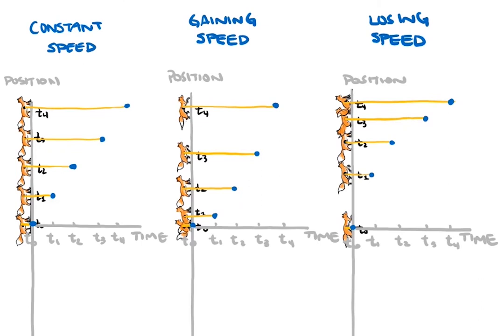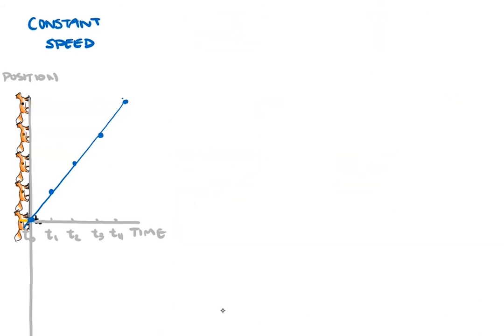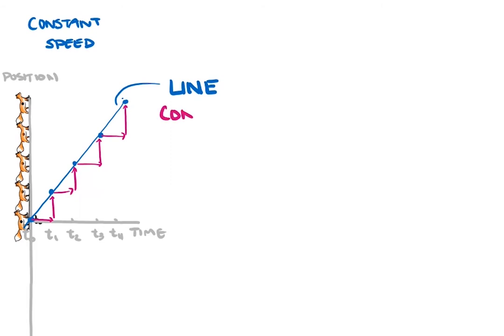For the constant speed graph, we see the points form a line. For the accelerating graphs, we see the points form curves. Looking more closely at the constant speed graph: a line, by definition, has constant slope. If we look at the fox's change in position — displacement — on the y-axis and each time interval on the x-axis, we see that the fox covers the same displacement every time. This is what it means for the fox to travel at constant speed.